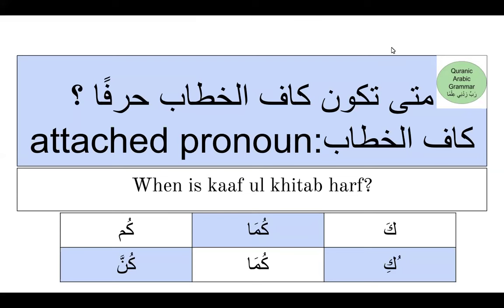Dear students, today we are going to learn about kaf al-khitab, which is an attached pronoun. The topic we are going to go over is when is kaf al-khitab a harf. Kaf al-khitab is an attached pronoun — we can see it here: ka, kuma, kun, ki, kuma, kunna. These kafs are called kaf al-khitab in Arabic. Kaf al-khitab is a second person pronoun — keep that in mind.